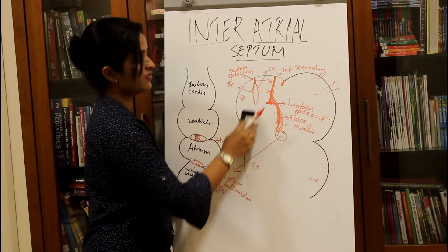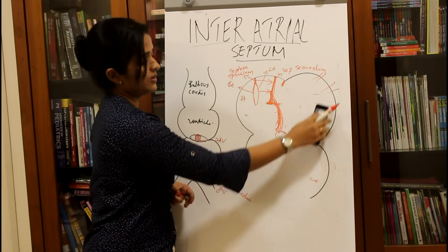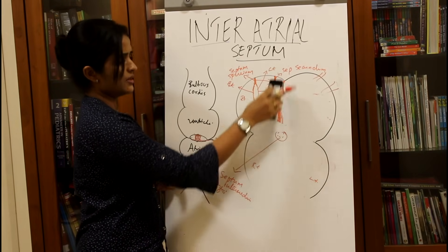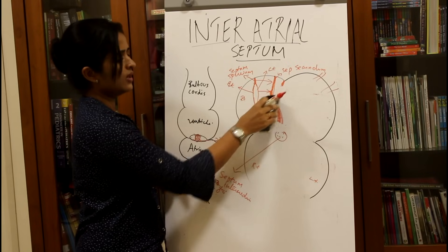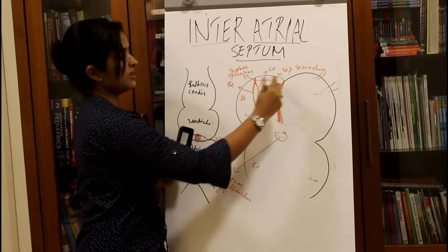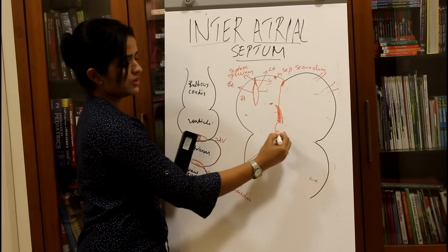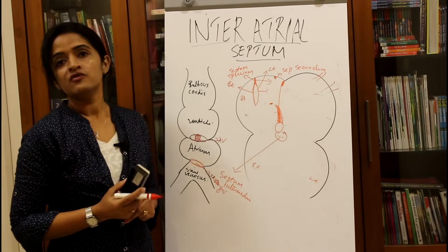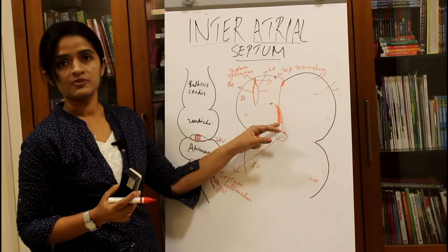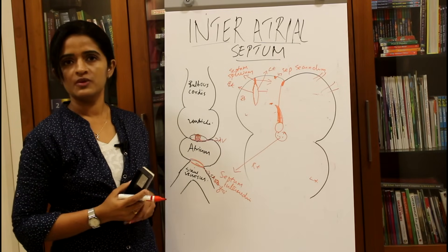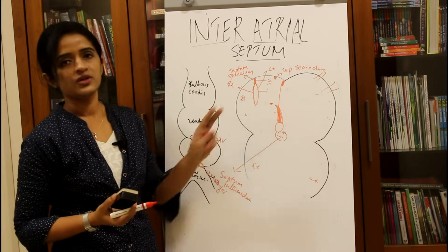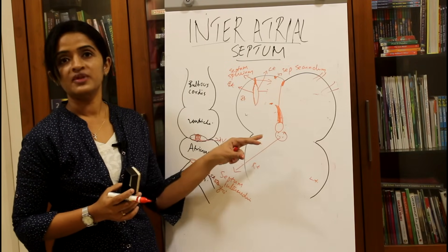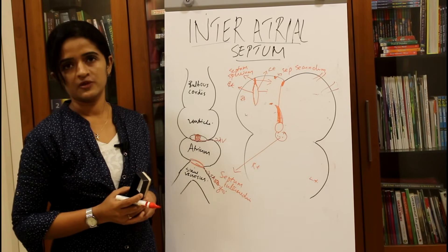Now let's look at defects of the inter-atrial septum. The first is the ostium primum defect: as the septum primum comes down, its lower end fails to fuse with the septum intermedium, so the ostium primum persists. This is called the ostium primum defect of the inter-atrial septum.